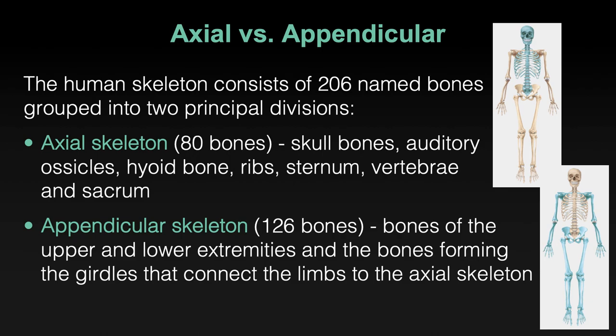Everything else is part of the appendicular system — kind of like the central versus peripheral nervous system. The axial is everything on the main axis; the appendicular skeleton is everything else: the bones of the upper limb, the shoulder girdle, the rest of the pelvis, both legs, all the hand bones, finger bones, and toe bones — 126 more bones. Right now I just want you to know the gross division between those two.